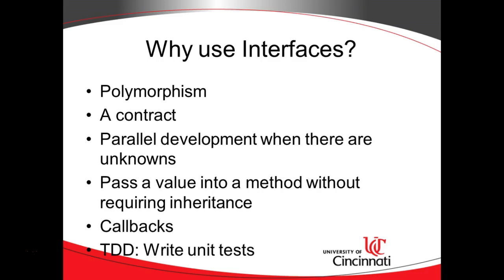Here's a big one: parallel development when there are unknowns. Sometimes when we're doing group work, we have dependencies on each other. I might have a dependency on somebody else, and that person might not have all the information he or she needs to do the job. If that person slows down, it slows me down as well. But if we enact a contract first and then come up with some kind of mock or stub of that contract, I can continue doing my work as the DAO person is also doing theirs.